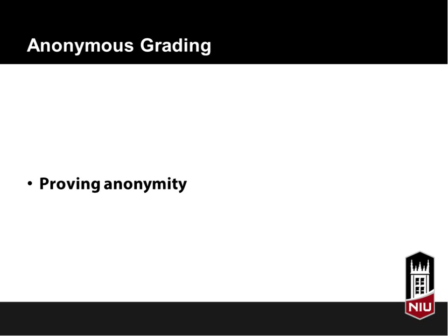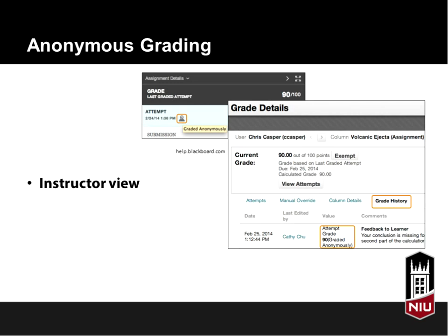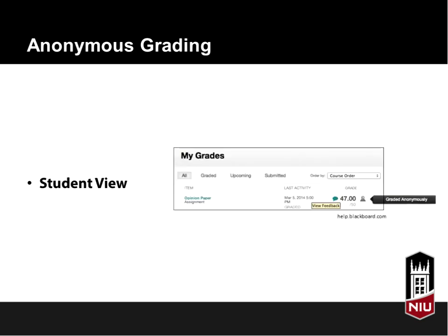Regarding proving anonymity, in the grade column or assignment details, a Grade Anonymously icon will appear on the assignment, letting you know it was graded anonymously. You can also see that in the Grade Details. From the student view, they see the same thing — that icon exists for them as well, so they know their submitted assignment has been graded anonymously. Another feature is that if you've left feedback, it shows up in a comment bubble for the student.